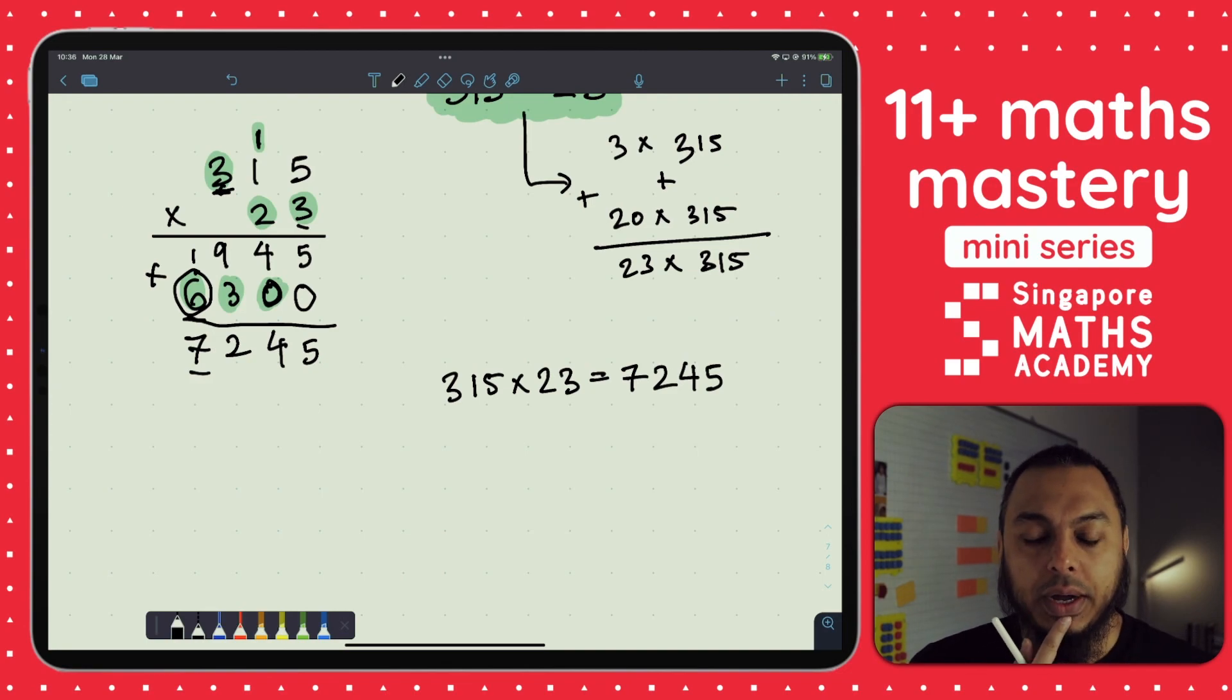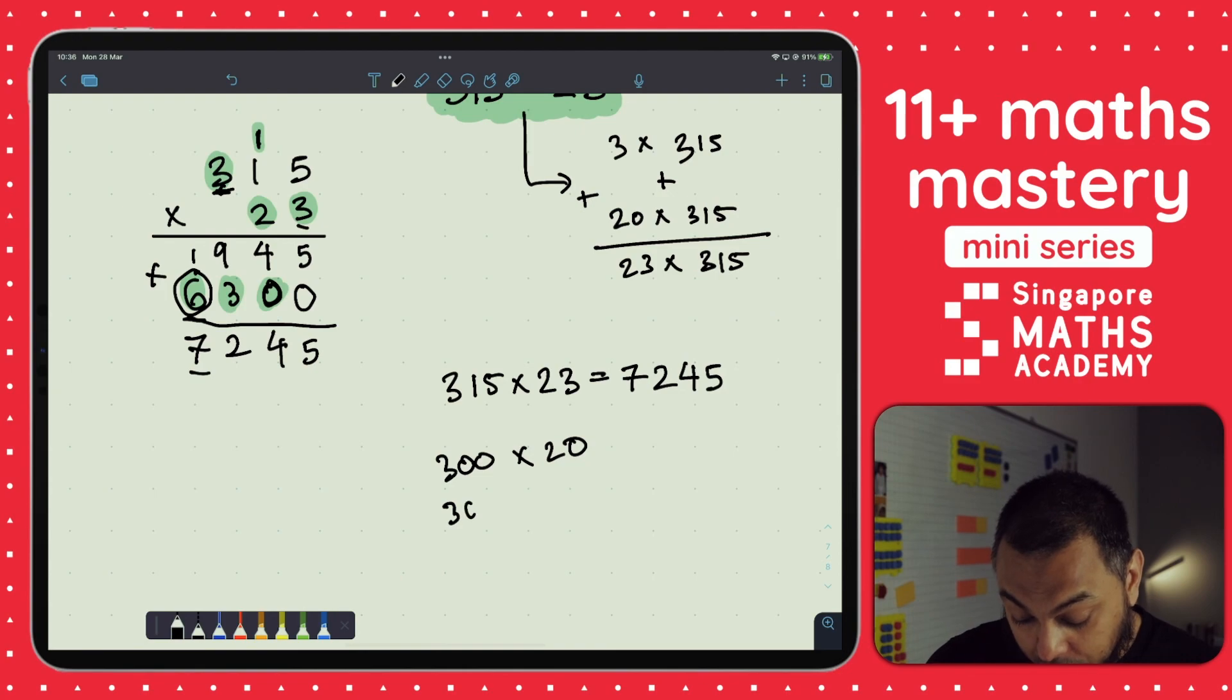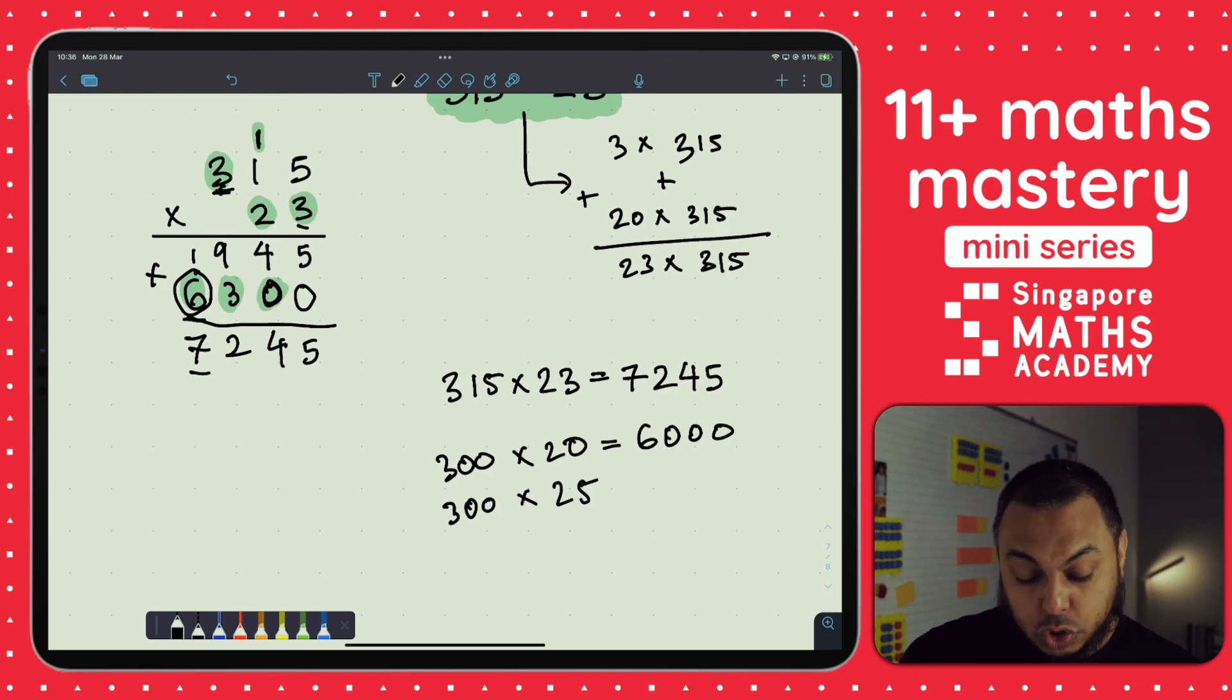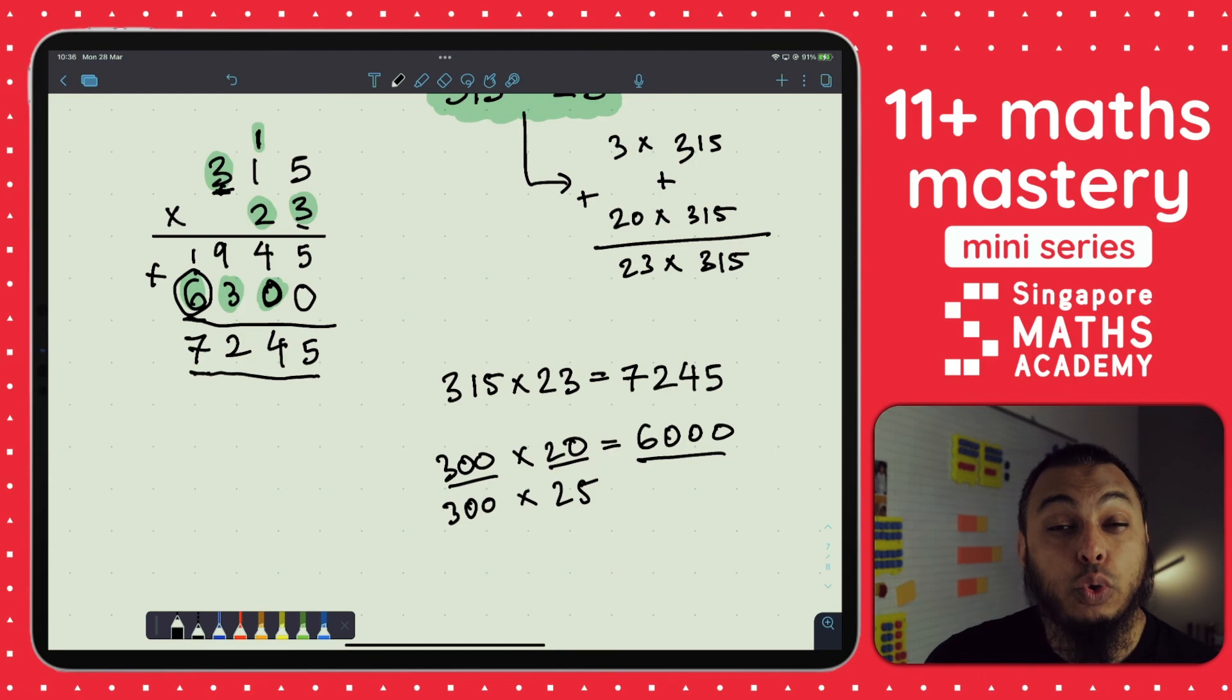We can check our answer. How do I check my answer? Maybe I could estimate, maybe it could be 300 times 20 or 300 times 25. That way I can just about understand where my answer should be. I know 3 times 2 is 6, and I've got 20 times 300, which makes it 6,000. So my answer should be more than 6,000, because I've got 300 here which is less than 315, and I've got 20 here which is less than 23. So my answer should be more than 6,000. That will help me decide, is my answer reasonable? I might have made a small mistake, but if my answer is something like 25,000, then I know I've done something majorly wrong. That's something we have to remind ourselves to check if we're unsure at any stage.